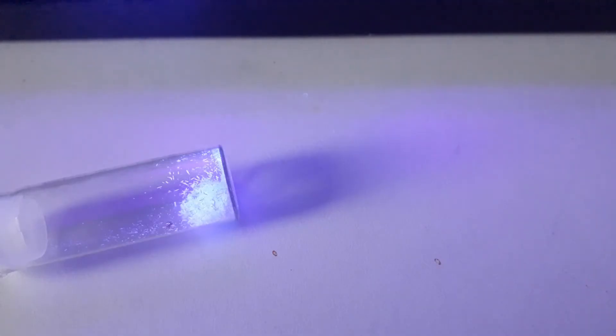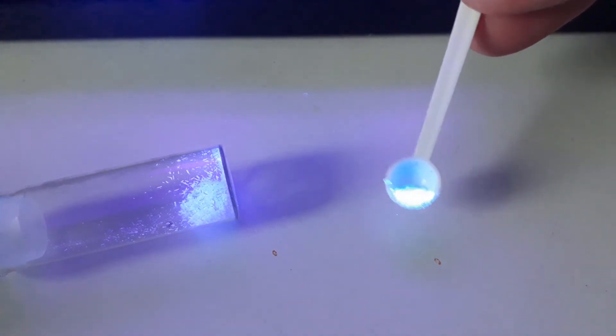Now for the final test whether this actually is our product, I will shine UV light on it to see whether it has any fluorescent properties. As you can see, it fluoresces, but not all that much. This could be due to tiny amounts of leftover anthracene. We can also compare it with the starting material, which is immensely more fluorescent under UV light.